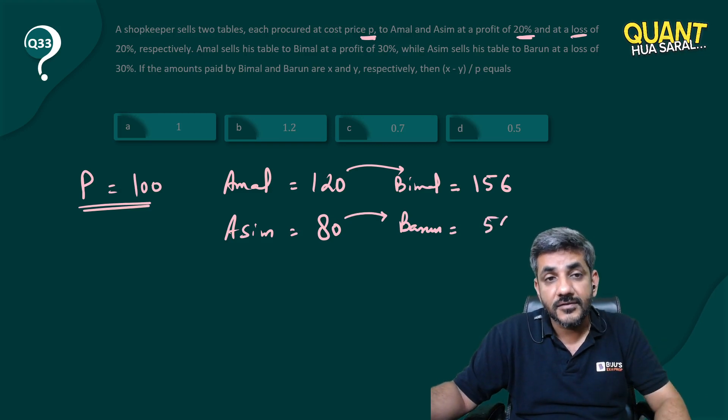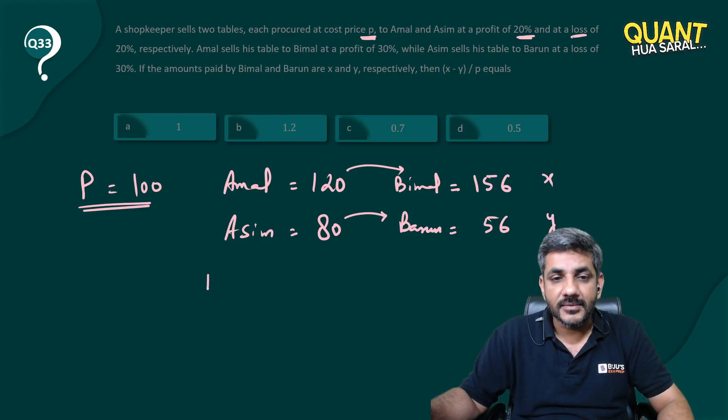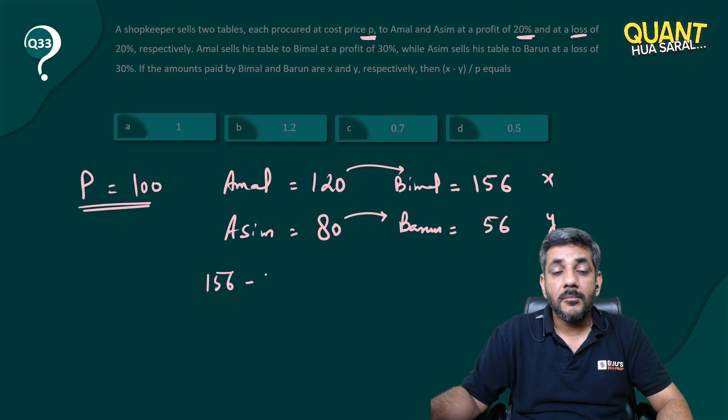of (X - Y) / P? X is 156 minus Y is 56, divided by P is 100. It is 100 by 100. My answer is option 1, that is A. This question was looking so difficult but